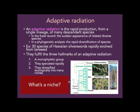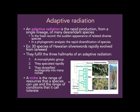A niche is the range of resources a species can use and the range of conditions it can tolerate. For example, one niche would be living on the sandy plains, another on rocky outcroppings, another in shade — all different ecological niches. The Hawaiian silverswords are an example of adaptive radiation: a tarweed appeared on the Hawaiian Islands and diversified to form 30 species that fulfill the three landmarks — they're a monophyletic group, they speciated rapidly, and they diversified ecologically into many niches.